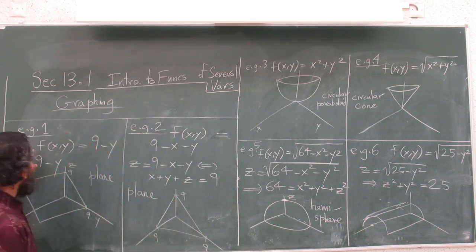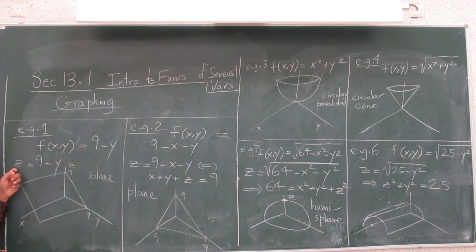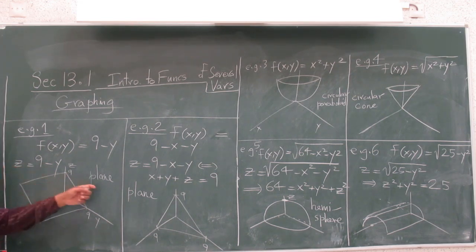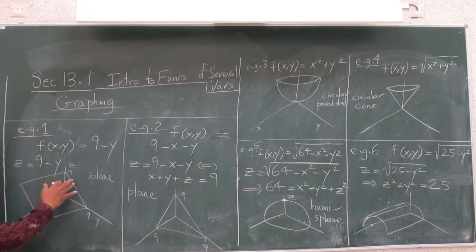Let's look at example one: f(x,y) = 9 - y. So if you write the equation z = 9 - y, or y + z = 9, there's a linear equation and you know there's a plane. Which particular plane is it? Because x is missing, it's like it has a cylinder.